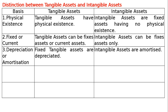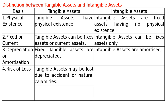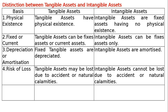The fourth basis of distinction is risk of loss. In case of tangible assets, tangible assets may be lost due to accident or natural calamities. In case of intangible assets, intangible assets cannot be lost due to accident or natural calamities.